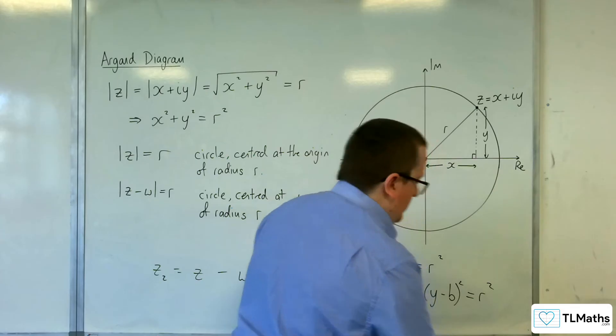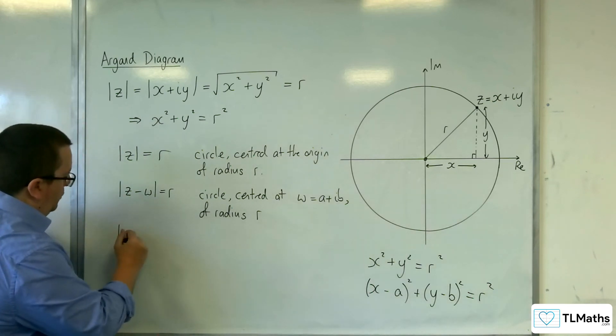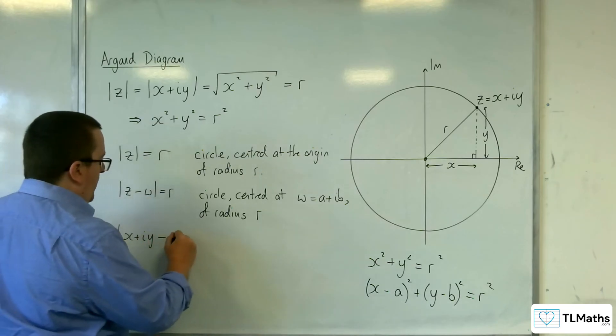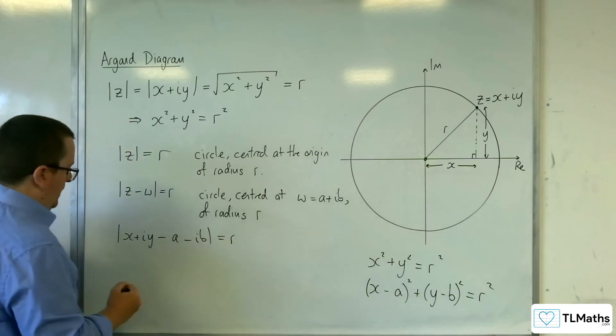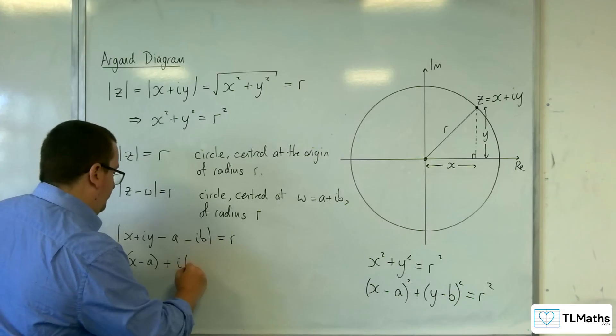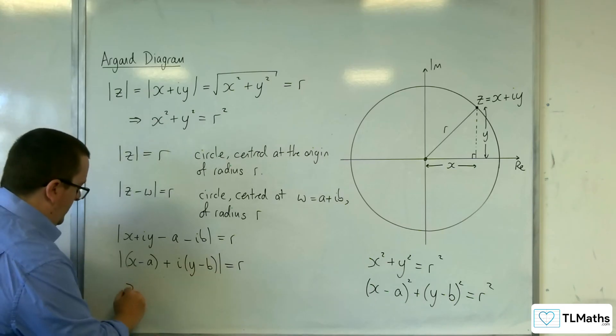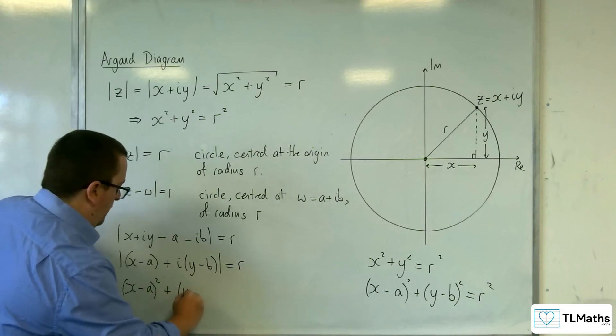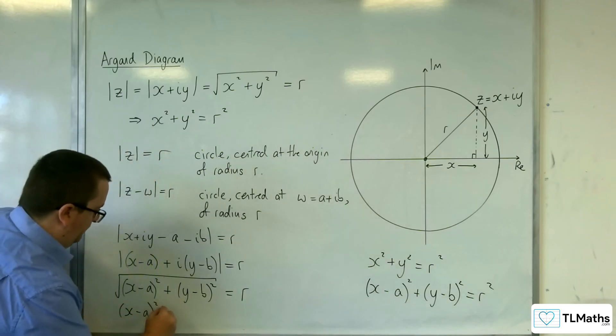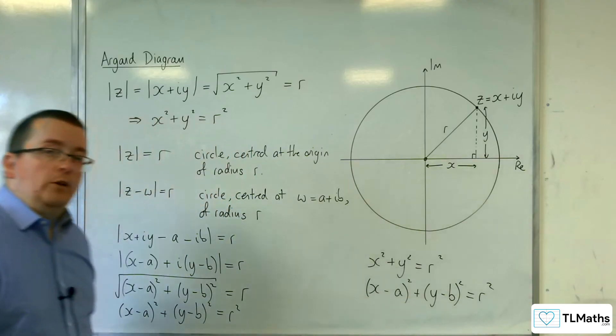Because if you're not convinced by that, think of it this way. So, z we know is x plus iy, and the w is our a plus ib. So, take away a, take away ib equals r. So, grouping the real parts together and the imaginary parts together, then the length of this complex number will be square root of (x - a) squared plus (y - b) squared, and then you square both sides. And you get to the circle equation that we had before.